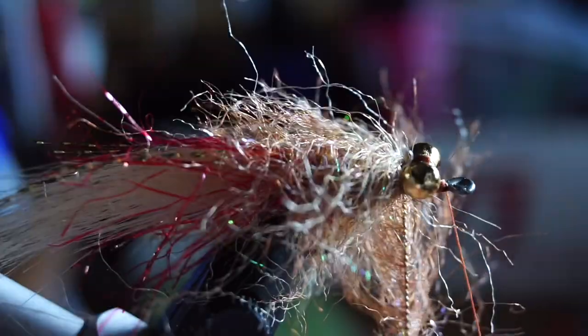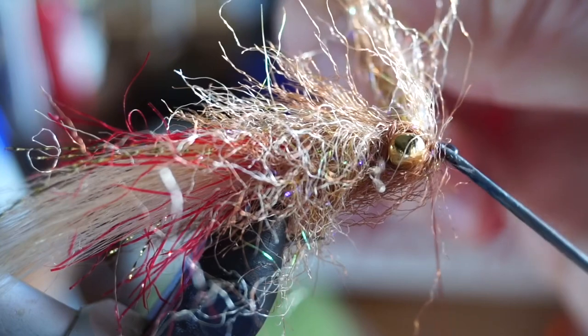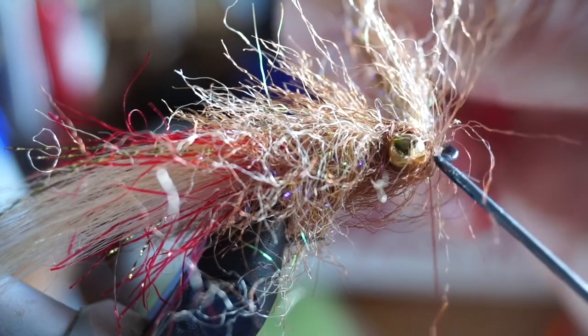Once you reach the dumbbell eyes, make a few really tight wraps under them and then advance the brush forward and make a few wraps up behind the eye of the hook as well. To keep your head not so large, try to pick out some of the fibers with your bodkin before capturing the brush.